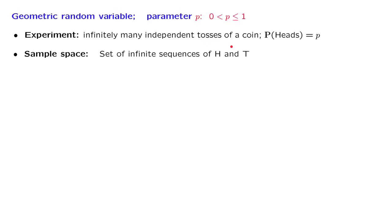The sample space for this experiment is the set of infinite sequences of heads and tails. A typical outcome of this experiment might look like this — a sequence of heads and tails in some arbitrary order. Of course, it's an infinite sequence, so it continues forever, but I'm only showing you here the beginning of that sequence.